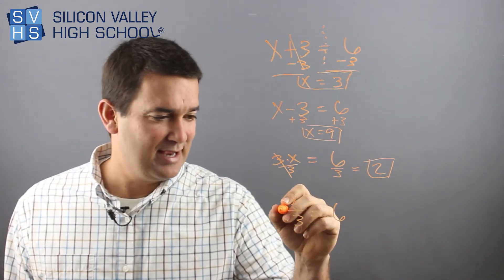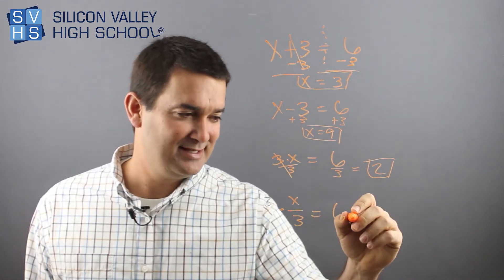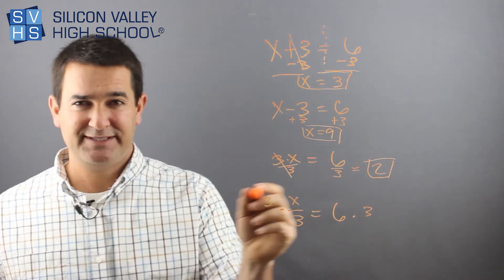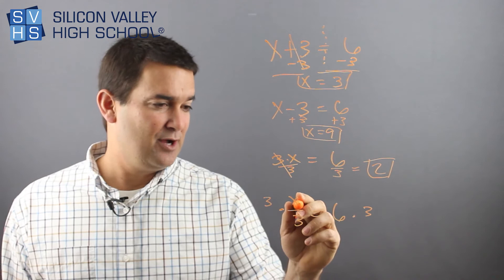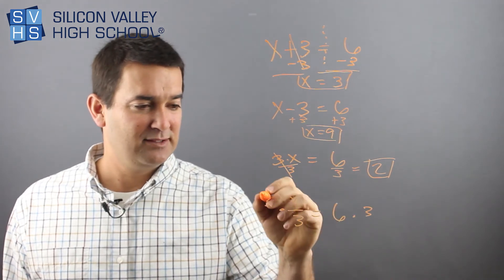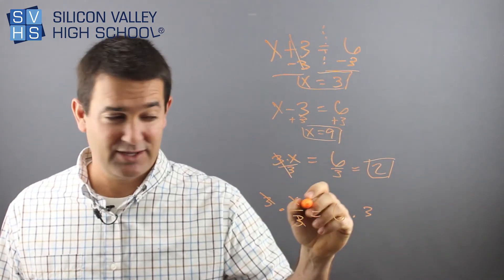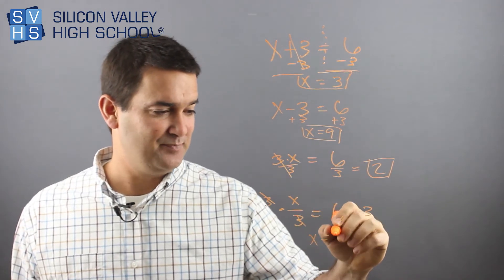You're going to multiply both sides by three. I would say by three over one, but that's unnecessary. So x divided by three, the threes cancel, which is my goal. X is alone. Now you just have x equals eighteen.